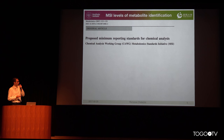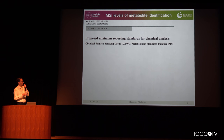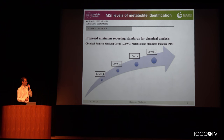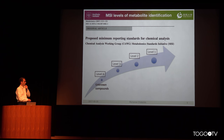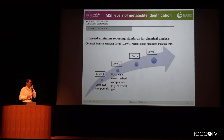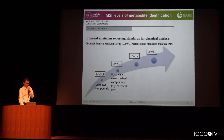There is a Metabolomics Standards Initiative paper which tries to standardize the identification levels of metabolites. First we have unknown compounds — just raw data. At level three we have putatively characterized compounds, where we know the class — for example whether it is a lipid or a sugar.